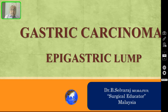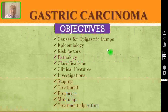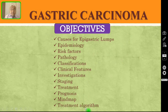Today in this episode, I am going to talk about one of the epigastric lumps — that is gastric carcinoma. After watching this presentation, all of you should be able to understand the various causes for epigastric lumps, the epidemiology, risk factors, pathology, classifications, clinical features, investigation, staging, treatment and prognosis of gastric carcinoma. I have also included a mind map and a treatment algorithm for gastric carcinoma.